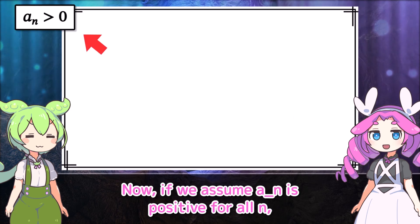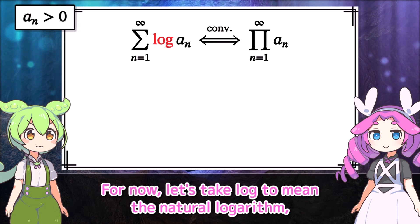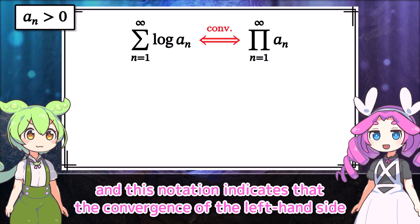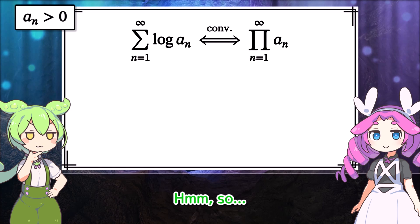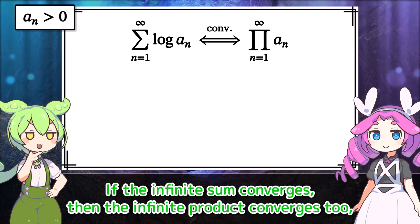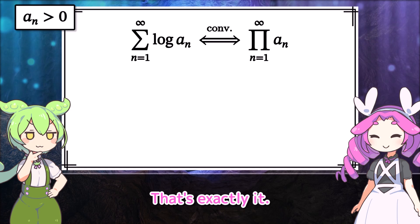Now, if we assume a_n is positive for all n, there's actually a relationship between infinite sums and infinite products like this. For now, let's take log to mean the natural logarithm. This notation indicates that the convergence of the left-hand side is equivalent to that of the right-hand side. So if the infinite sum converges, then the infinite product converges too, and conversely, if the infinite product converges, the infinite sum also converges, right? That's exactly it.